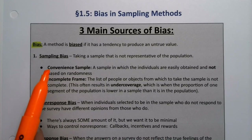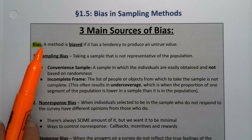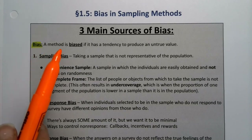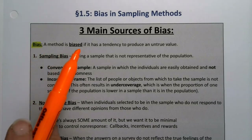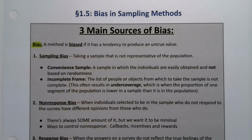We said that convenient samples are biased. Bias means that when you take that sample, it's going to lead to untrue results. Any method is biased if it has a tendency to produce an untrue value — if it's skewed in some way towards one group or another, for example.